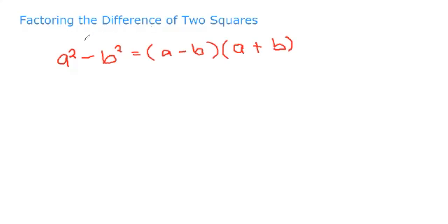So we have a minus b and the other one is a plus b — the sum and difference of two squares. So a squared minus b squared is equal to a minus b multiplied by a plus b.